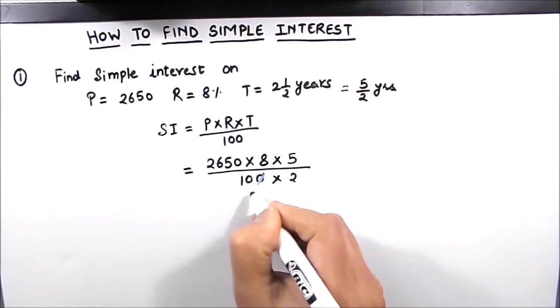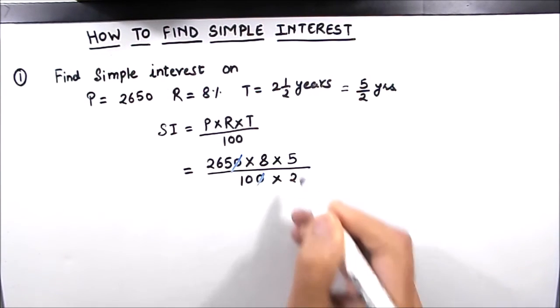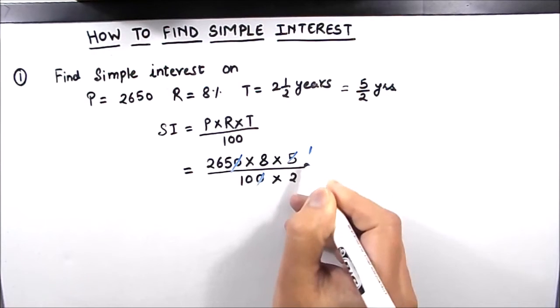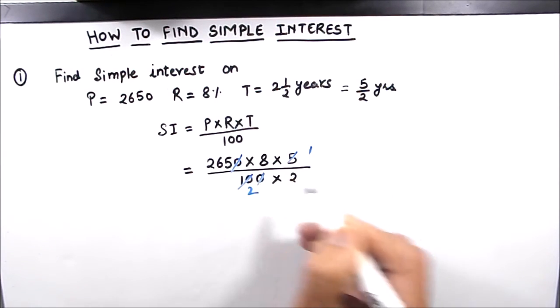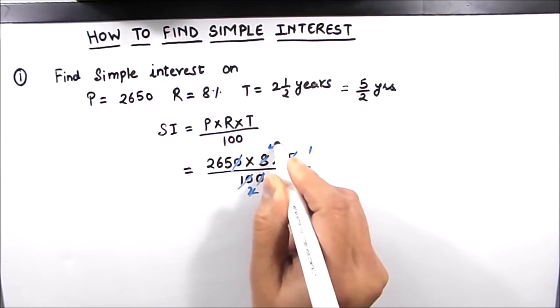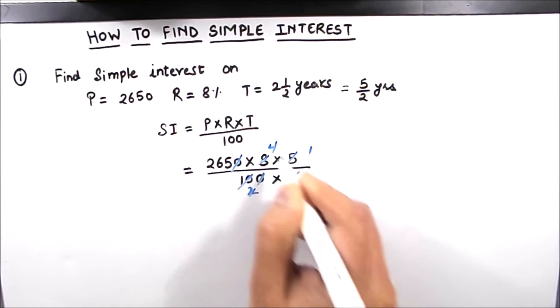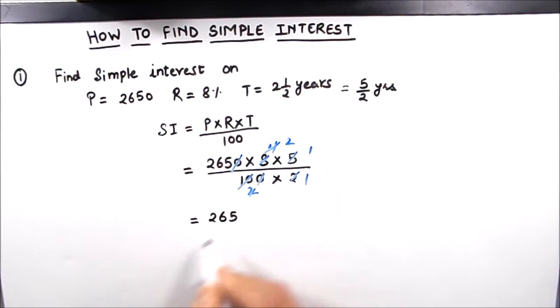So here this 0 gets cancelled with this 0. 5 times 1 and 5 times 2 is 10. 2 times 4 is 8 and 2 times 2 is 4. We are left with 265 times 2 which is equal to 530. So our simple interest is 530. So our final answer is rupees 530.